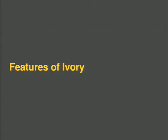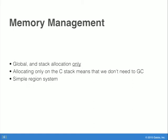Stepping back a little bit, some other features of Ivory are the way it does memory management. One of the rules from the Power of 10 was that you don't allow dynamic allocation after initialization. The way we enforce this in Ivory is simply to never allow it at all. We do all of our allocation during program execution on the stack, which is convenient because we're mostly targeting embedded platforms where we don't want to include a garbage collector — it's convenient to just use the C stack for memory management instead. Additionally, we implement a simple region system which corresponds roughly to the current function frame or the global region.